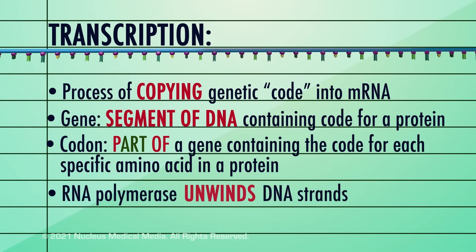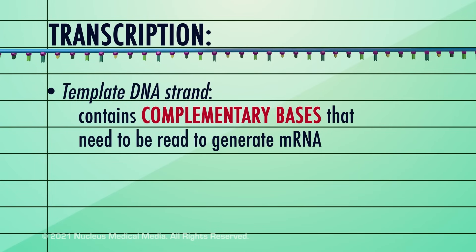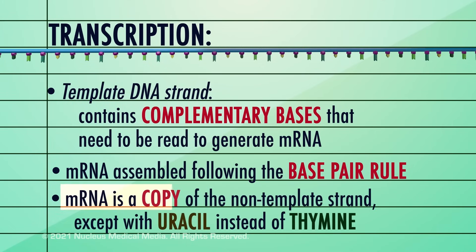RNA polymerase unwinds the strands of DNA in a gene. The template DNA strand contains the complementary bases that need to be read to generate messenger RNA. The base pair rule is followed when assembling messenger RNA. Messenger RNA is actually a copy of the DNA non-template strand with uracil substituted for thymine.